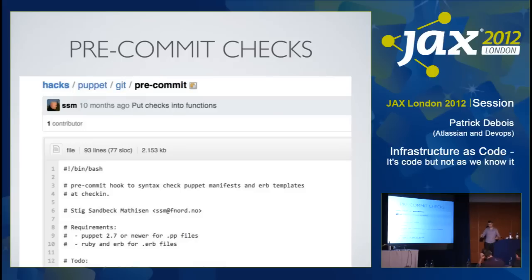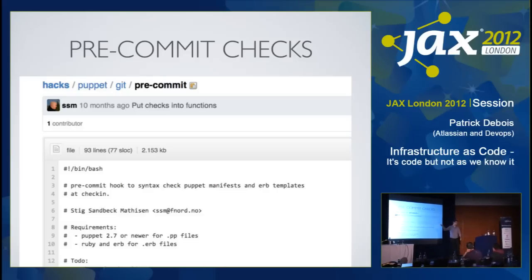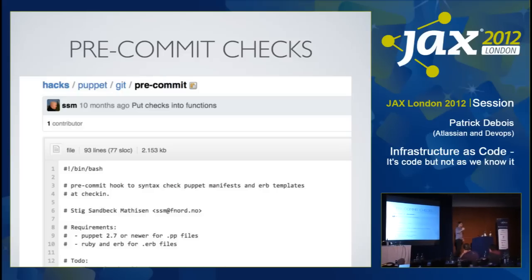So we got the code, we got the initial checks. Now we can do pre-commit checks. Before you commit something to the code base, we can have the lint tests and the food critic tests run, so at least we know it's compliant. It's just some practice we reuse from development.